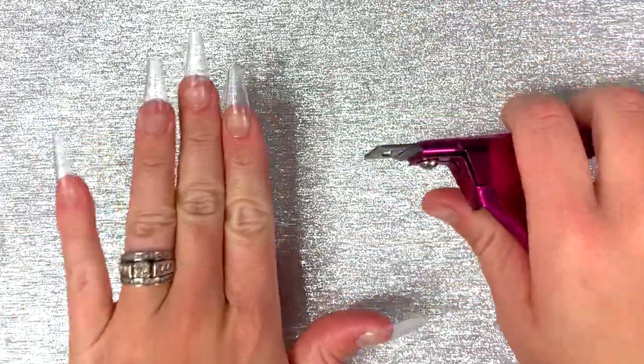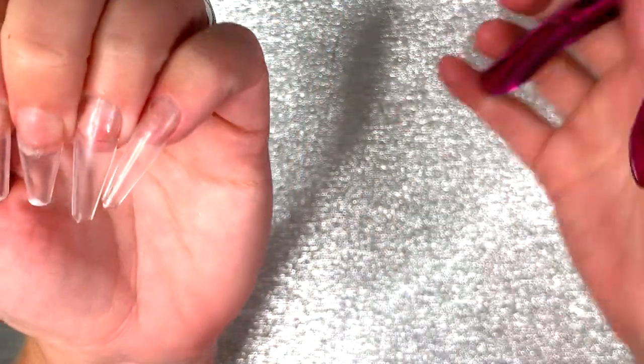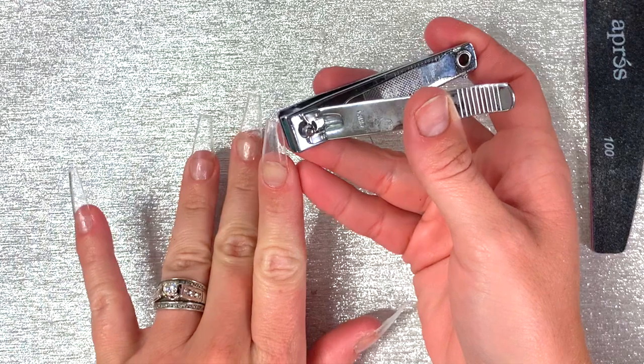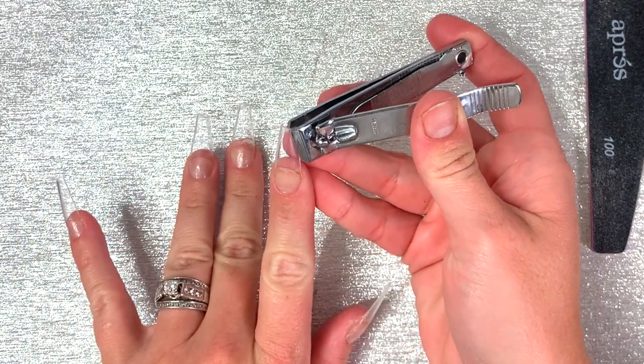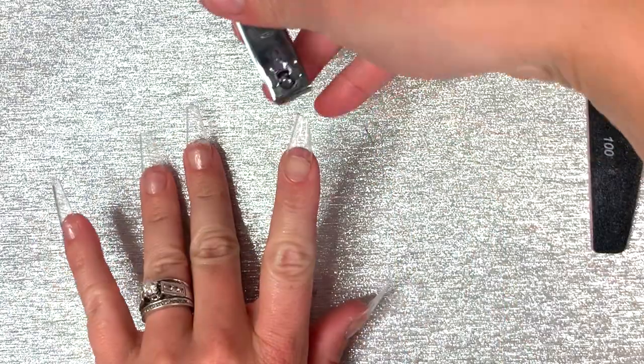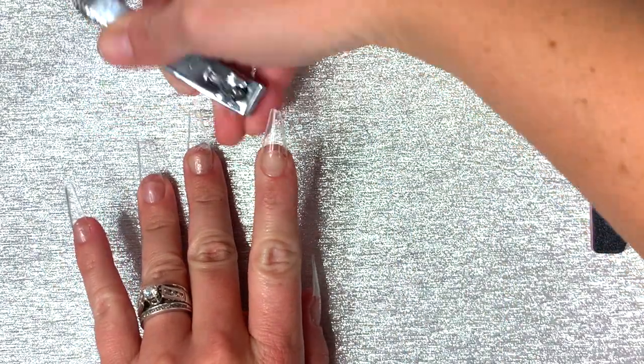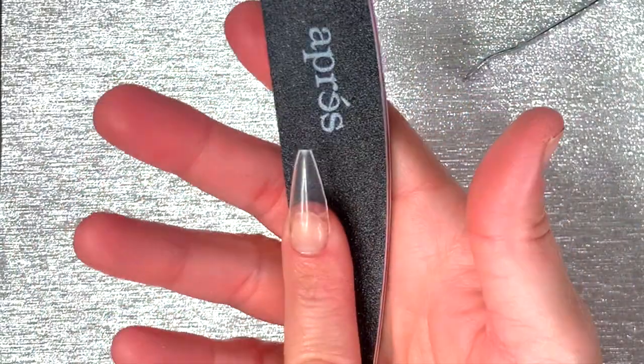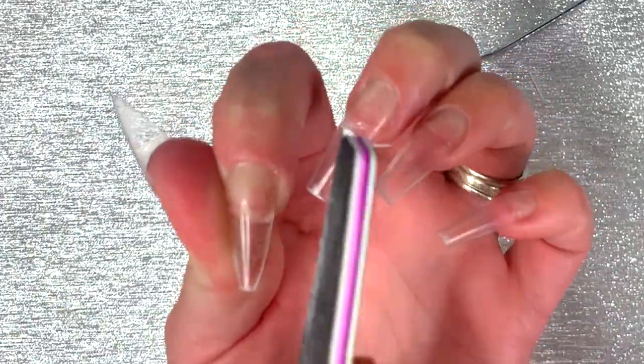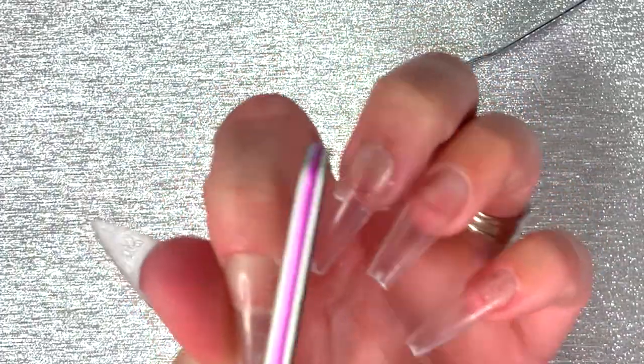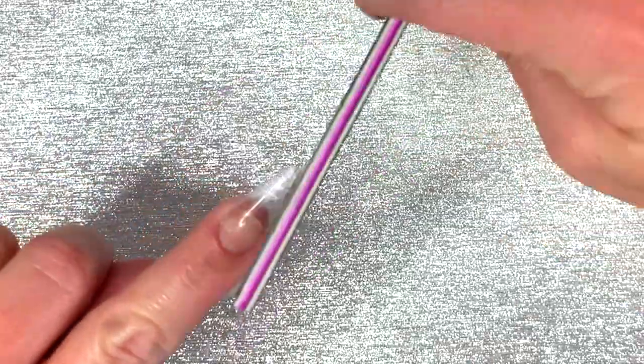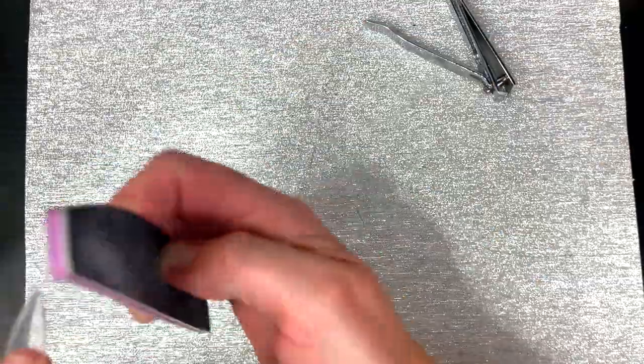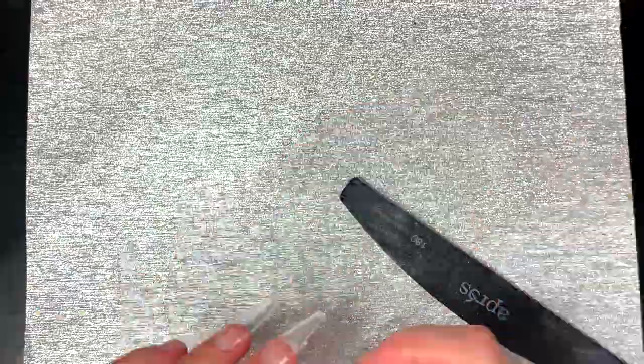I'm going to start shaping them into a stiletto shape. I'm not gonna lie, this was my very first time doing a stiletto shape. I am a coffin lover, but once I got going I think the last three nails looked a lot better than the first two. It really wasn't too hard. I just clipped the sides and then I started rounding the top with my file. It's super hard to show you how to file on camera because my hand is just bouncing all over the place.